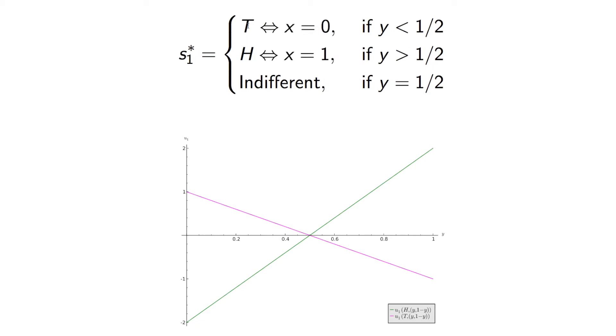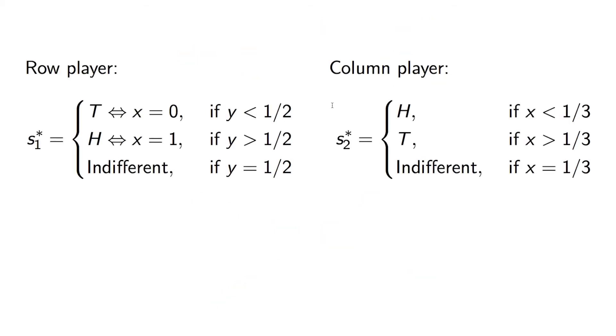But of course, tails is just the same as saying x equals 0 if x is the probability with which player 1 plays heads. And H is just the same as saying x equals 1. So these are some mixed strategies now. And we could do this exact same thing for the column player, for player 2, and what we get is something like this.